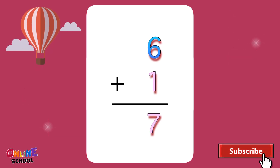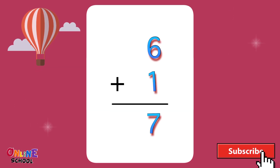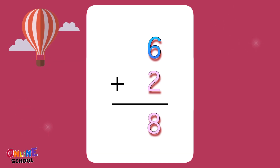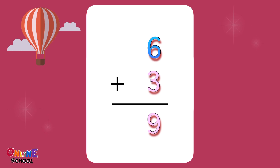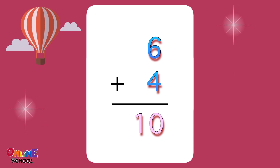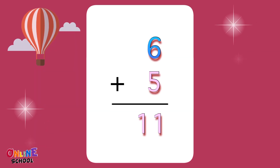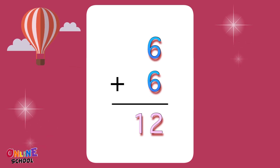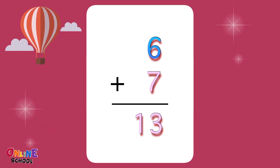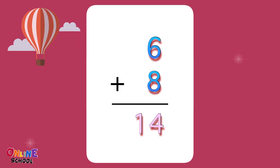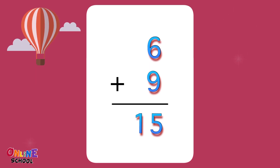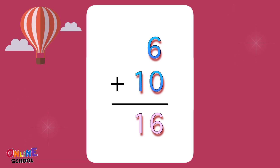Table 6: 6 plus 1 equals 7, 6 plus 2 equals 8, 6 plus 3 equals 9, 6 plus 4 equals 10, 6 plus 5 equals 11, 6 plus 6 equals 12, 6 plus 7 equals 13, 6 plus 8 equals 14, 6 plus 9 equals 15, 6 plus 10 equals 16.